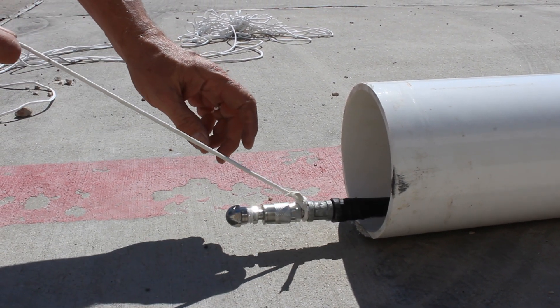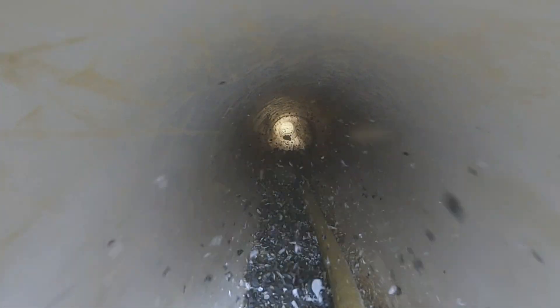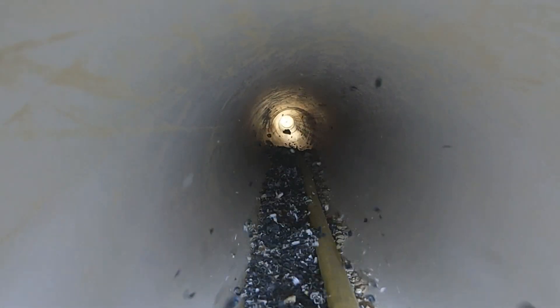We're going to turn on our compressor and slowly pull the jetting head through the pipe. As you can see, the air is blowing all of the debris and the dirt out. You may need to pass through the pipe two or three times to ensure that the inside is completely clean.